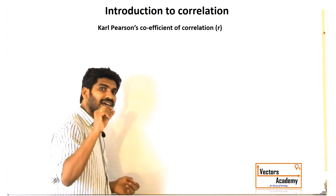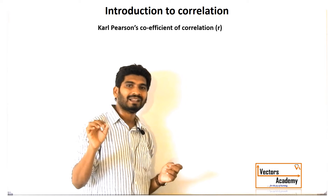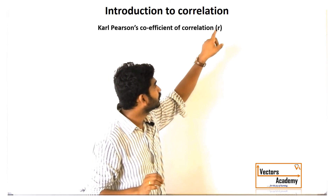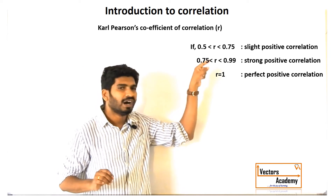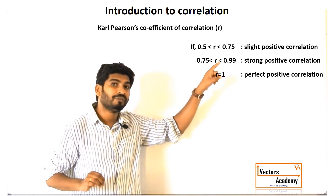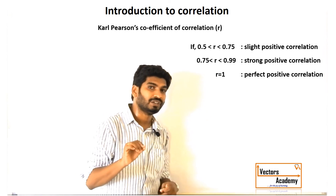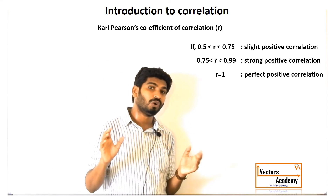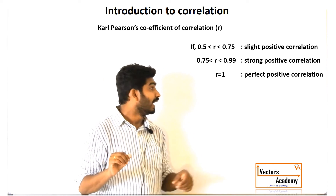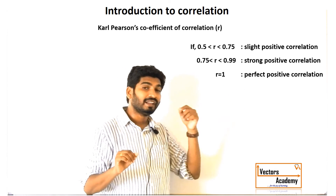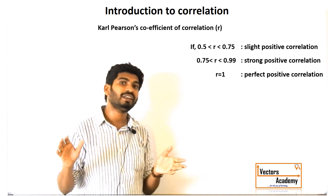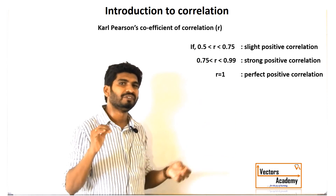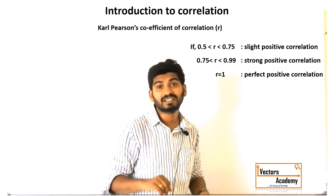What Carl Pearson did is he calculated the coefficient of correlation, which gives a mathematical value to the correlation. The symbol for this coefficient is r. If the value of r is greater than 0.5, there is a slight positive correlation. If r is greater than 0.75, there is a strong positive correlation. If r is equal to 1, there is a very high correlation between the two variables. The calculation of r will be seen in the next example.